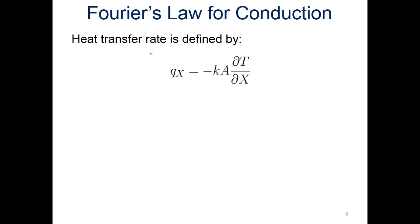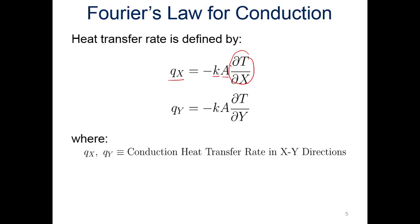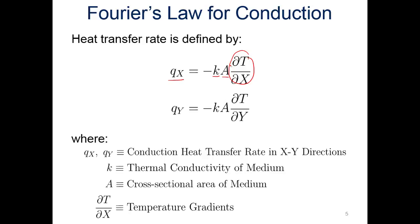From Fourier's law, the heat transfer rate Q is equal to the conduction coefficient times the area times the temperature gradient along some direction — in this case the X direction. We also have it in the Y direction, because for a 2D case we're going to have both of these showing up. The conduction heat transfer rates in the X and Y directions are represented by the lowercase q's. Thermal conductivity of the medium is K, cross-section area of the medium is A, and the temperature gradients are dT/dX and dT/dY.